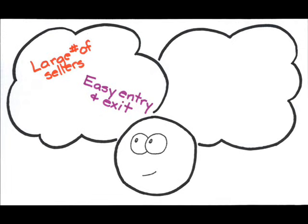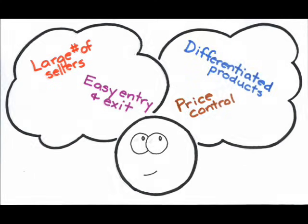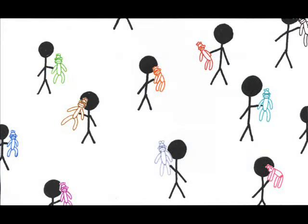But moving in the direction of a monopoly, the monopolistic competitor's product is differentiated, albeit only slightly, from the products produced by its rivals. This product differentiation gives the monopolistically competitive firm a small amount of control over the price that it can charge — not a lot of control, because the products are still highly similar, but a little control.